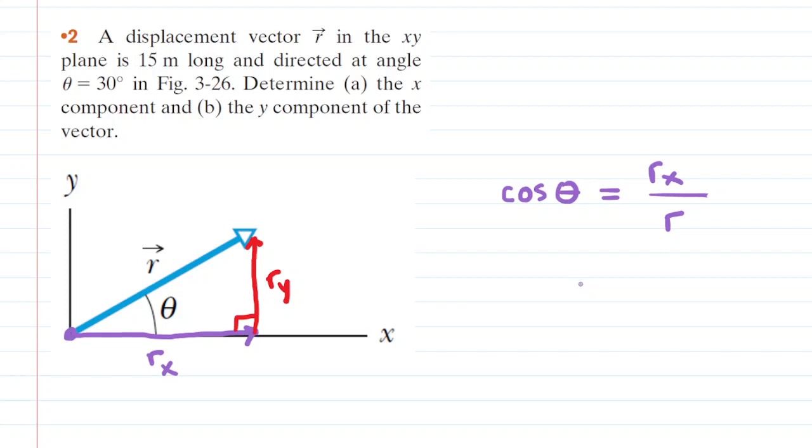We can plug in some values here. The question notes that the angle is 30 degrees. So cosine of 30 degrees equals r sub x over the magnitude of this displacement vector, which was 15 meters.